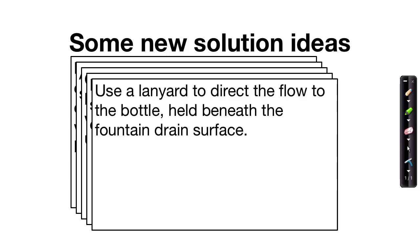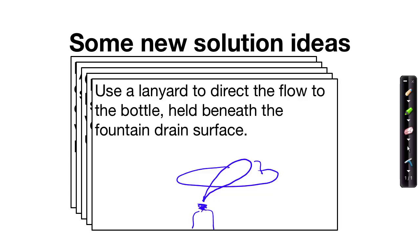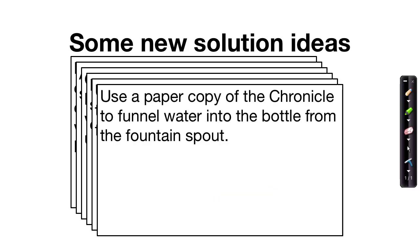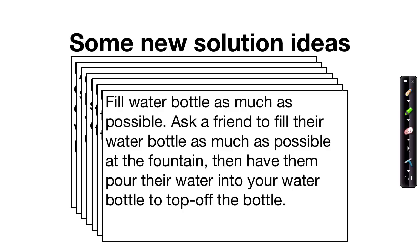Fifth, we could use a lanyard to redirect the flow of the water into the water bottle. Sixth, we could use a paper copy of the school paper to funnel the water into the bottle from the fountain spout. And finally, we could fill the water bottle as much as possible and then ask a friend to fill their water bottle as much as possible, then have them pour their water into your bottle to top it off.